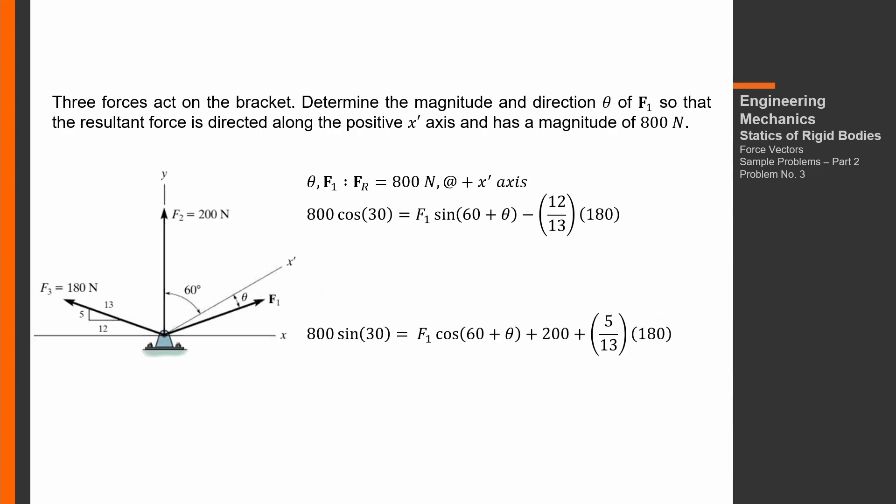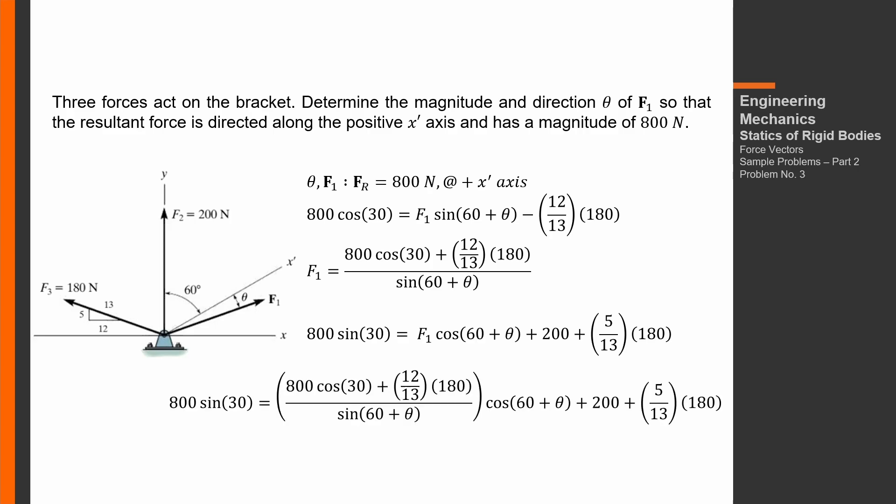We have two equations and two unknowns, so this is solvable. The resulting equation expresses F1 in terms of theta. From the first equation, we add (12/13)(180) to both sides and divide both sides by sine(60 + theta), isolating F1 on the left side with theta on the right.